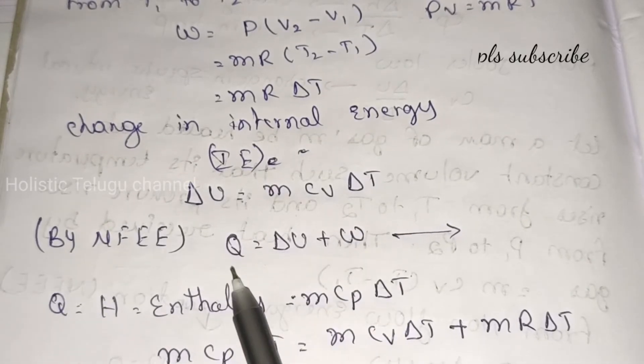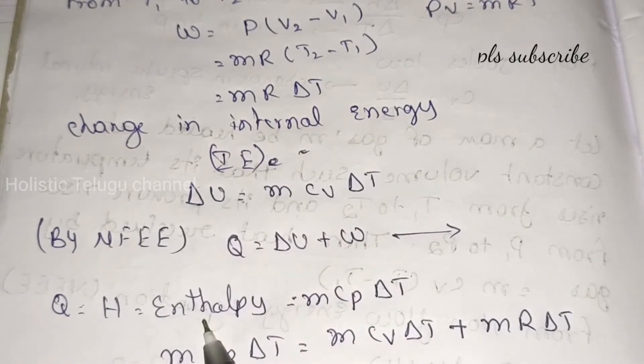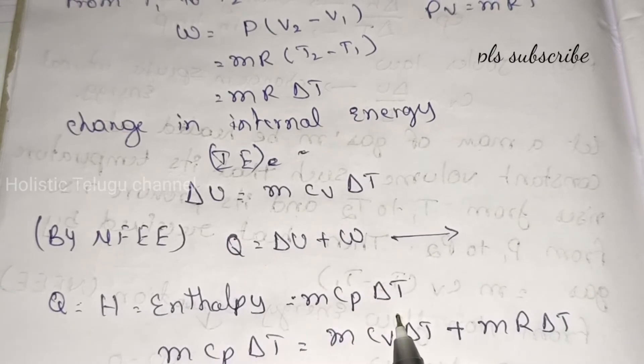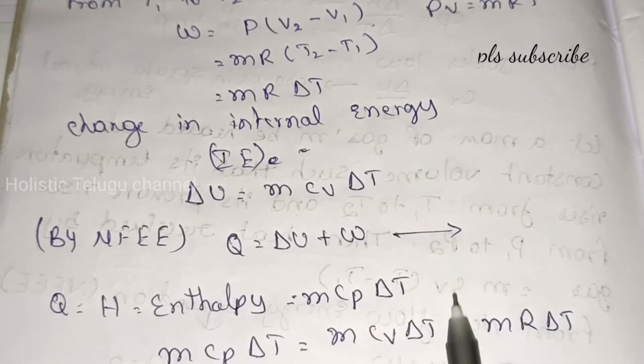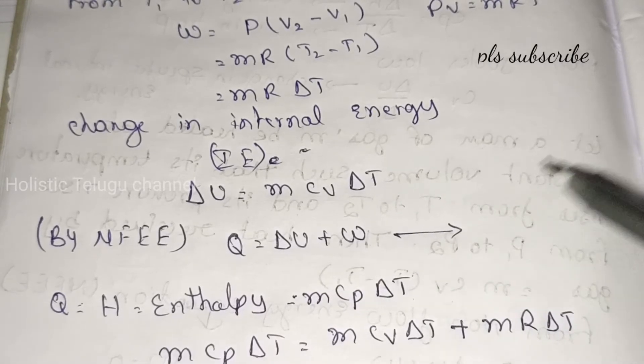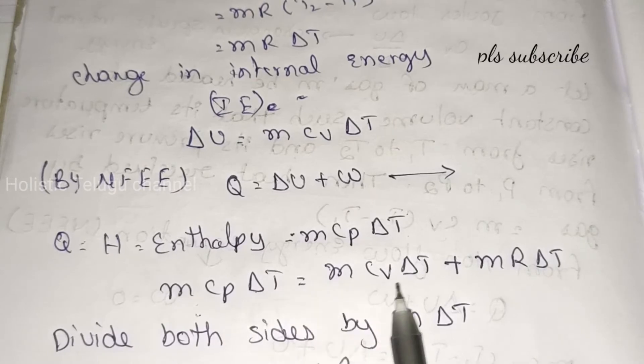From NFEE equation Q equal to delta U plus W. We have delta U and W, but Q is enthalpy. Enthalpy is m Cp delta T. So using these three equations in the NFEE equation, we get m Cp delta T equal to m Cv delta T plus m R delta T.